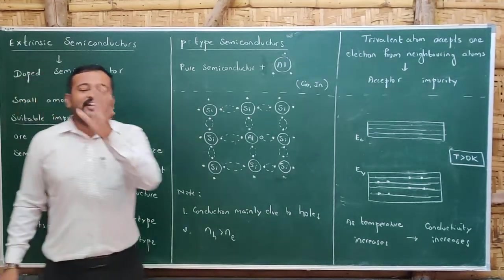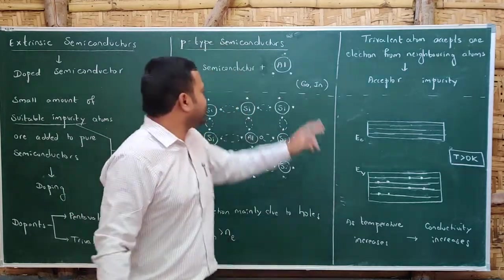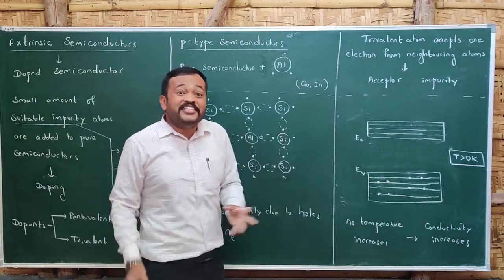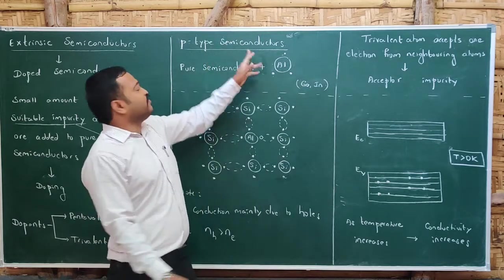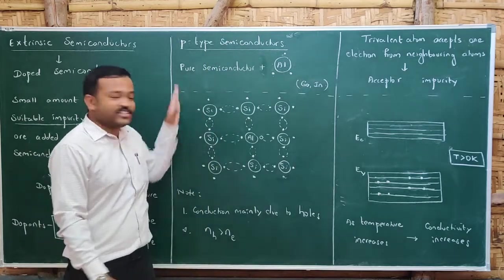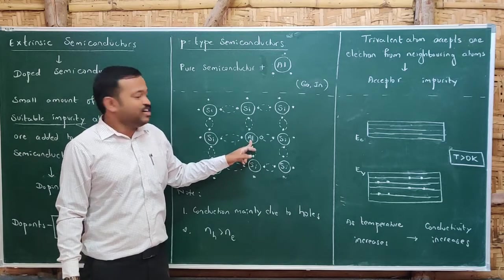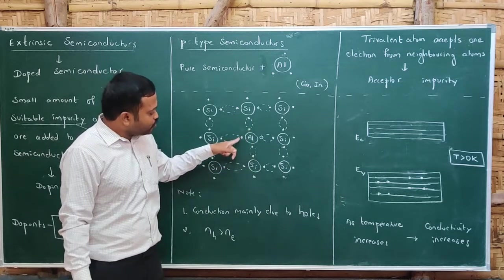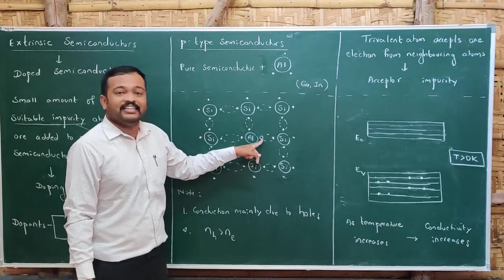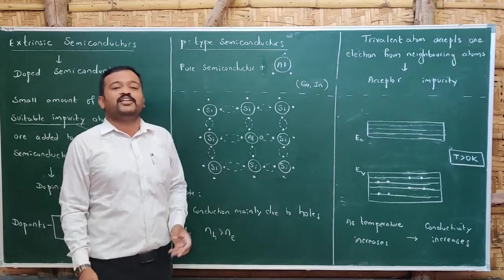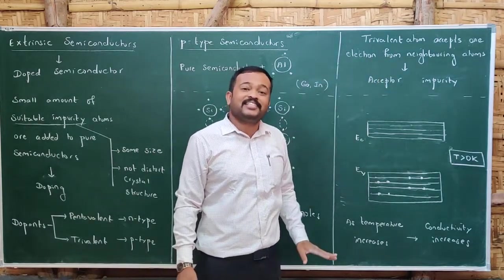Now let us understand P-type semiconductors. These are semiconductors formed by adding trivalent impurities such as aluminum, gallium, or indium, which have three valence electrons. When this kind of impurity is added to a pure semiconductor, we get a P-type semiconductor. In the crystal, the aluminum atom has only three valence electrons, leaving a vacancy — a hole. Since the trivalent atom can accept one electron from a neighboring atom, these impurities are called acceptor impurities.